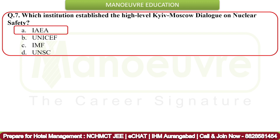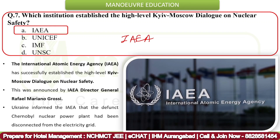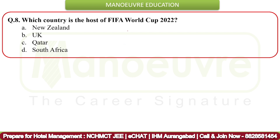Next question: Which institution established the high-level Chernobyl-Moscow dialogue on nuclear safety? The correct answer is the IAEA. The International Atomic Energy Agency (IAEA) successfully established the high-level dialogue on nuclear safety, as announced by IAEA Director General Rafael Mariano Grossi. Ukraine informed the IAEA that the defunct Chernobyl Nuclear Power Plant had been disconnected from the electricity grid.